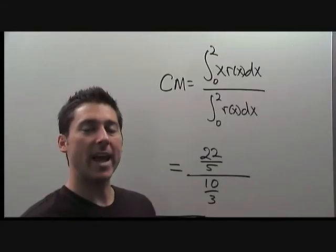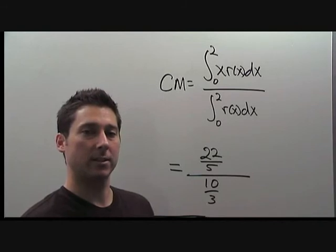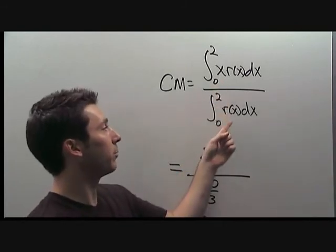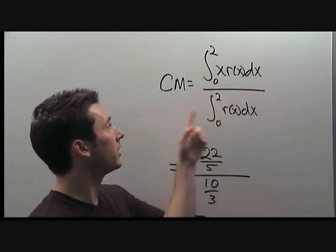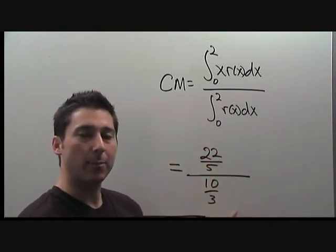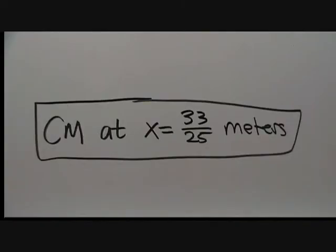We can now finish with a value for the location of the center of mass. We computed both integrals separately, so the center of mass is (22/5) ÷ (10/3). The center of mass is located at x = 33/25 meters, measured from the left end of the rod.